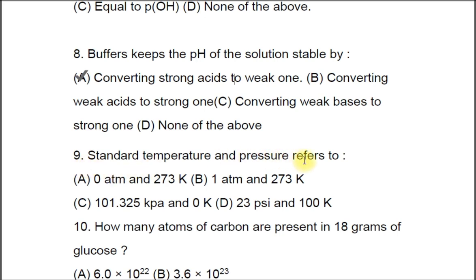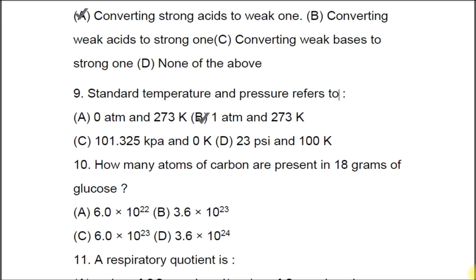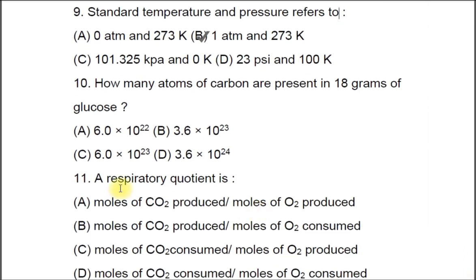Question 9: Standard temperature and pressure refers to A) 0 atmosphere and 273 Kelvin, B) 1 atmosphere and 273 Kelvin, C) 101.325 kilopascal and 0 Kelvin, D) 23 PSI and 100 Kelvin. The correct answer is B, 1 atmosphere and 273 Kelvin.